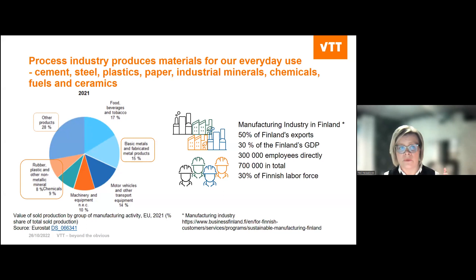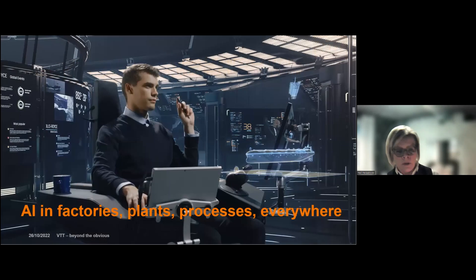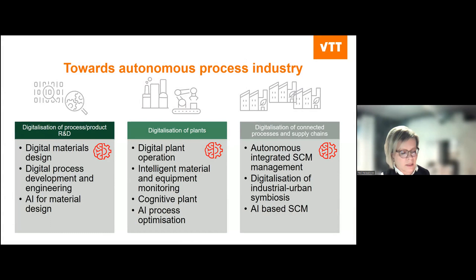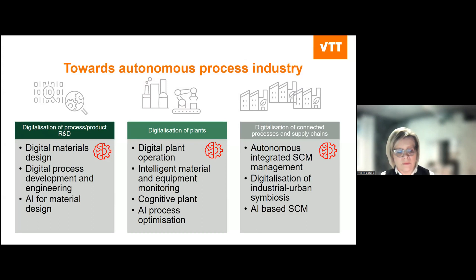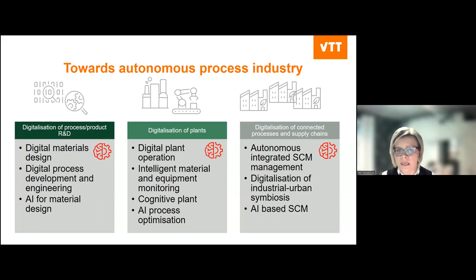We really need to find solutions for these challenges. So what does AI in factories, plants and processes really mean in practice? We are going towards autonomous process industry — the automation level is increasing all the time. If we divide production into three levels, the first is how do we digitalize process and product research and development? How do we design the materials, and how can we use AI for material design?